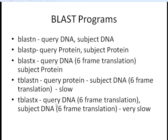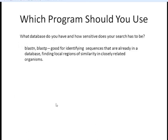So which program should you use? It depends on your database, your query, and how much sensitivity you need. BLASTN and BLASTP are both good for identifying sequences already in databases or finding local regions of similarity in closely related organisms. BLASTX is what you want when you have nucleotide sequences with an unknown reading frame or sequence errors that could cause a frameshift — the six-frame translation will catch the alignment across frames.